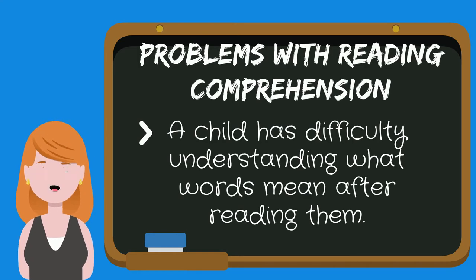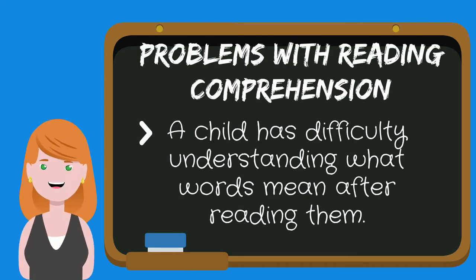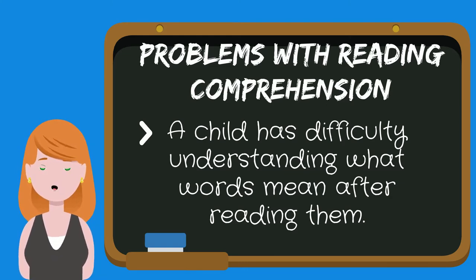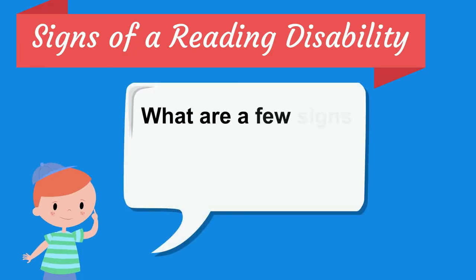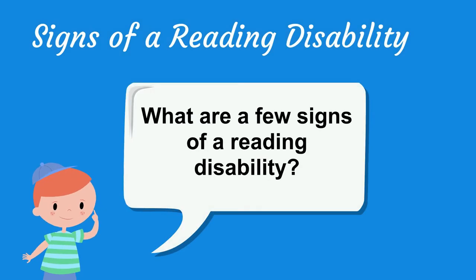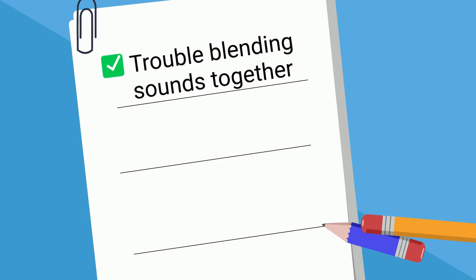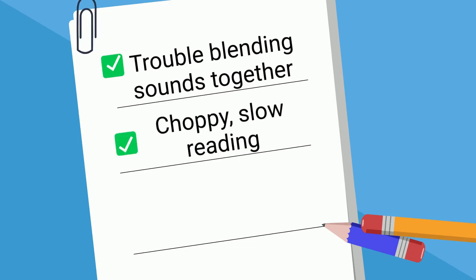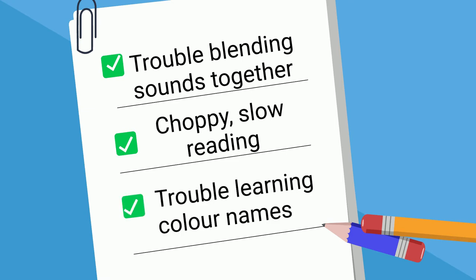They may also have problems with reading comprehension. For example, a child has difficulty understanding what words mean after reading them. A few signs of a reading disability are trouble blending sounds together, choppy slow reading, or trouble learning color names.